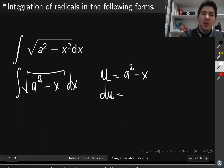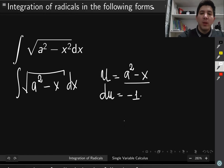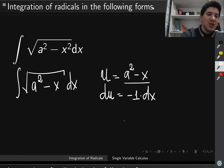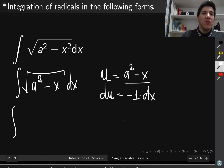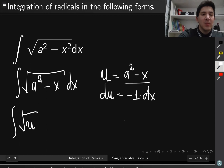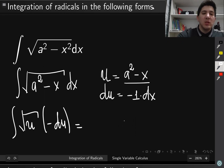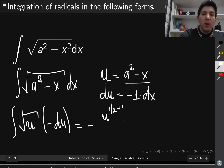Then du is equal to the derivative of the right-hand side with respect to x, which is going to be equal to minus one multiplied by dx. Then we can substitute everything with the new variable u, giving us the square root of u multiplied by minus du, which is very straightforward to integrate. It's going to be minus u to the power of one-half plus one, divided by one-half plus one, plus the constant.